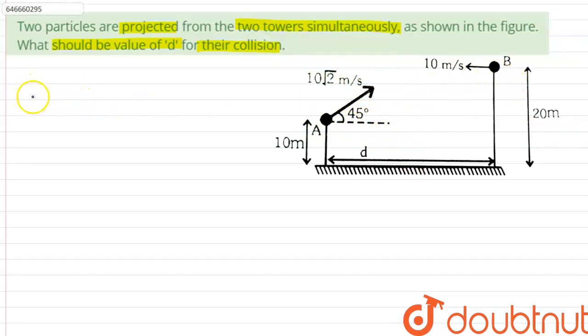The height of particle A at any given instant T can be denoted by HA and it will be equals to 10 plus uA sin 45, which is the vertical velocity of particle A which is 10, multiplied by T minus half of gT squared.